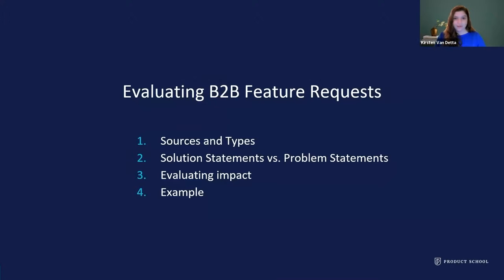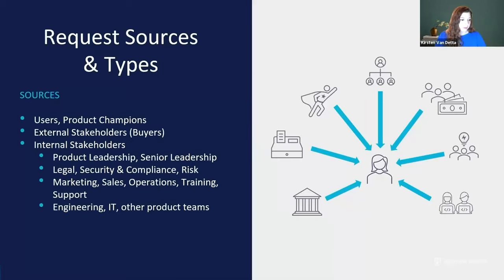Let's dig into evaluating feature requests in the B2B space. There are three things important to think about when you put on your product leader hat. As product managers, we think of valuable, usable, and feasible — but this takes you further in thinking about the full ecosystem. You're going to get requests from literally everywhere: technical security issues, tech debt from engineering, legal compliance needs, senior leaders with new initiatives, users who need workflows fixed, and stakeholders with new impactful needs.